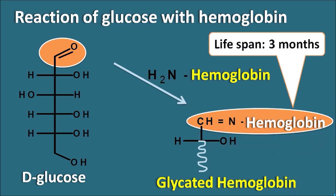Normally hemoglobin has a lifespan of three months, thereby the glycated hemoglobin indicates the glucose levels for the past two to three months in the plasma. One more important thing is that the conversion of glucose to glycated hemoglobin is not an enzymatic process — it is a non-enzymatic process.